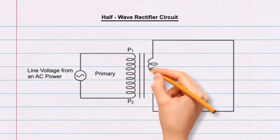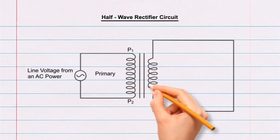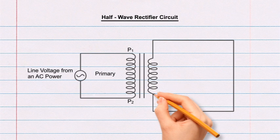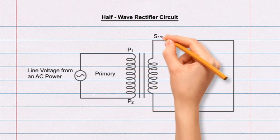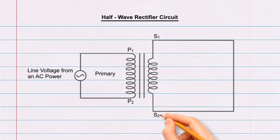On the left vertical line of the larger rectangle, rub off the middle region and draw a spring with length slightly less than the primary winding. Label the top end as S1 and the bottom end as S2. S1 and S2 represent secondary windings.